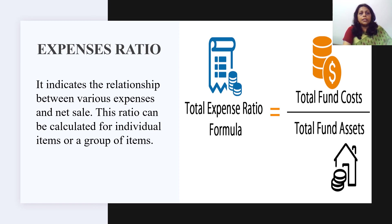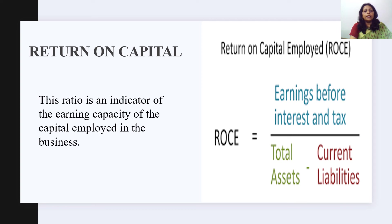For example, the office expense ratio is calculated by dividing office expenses by net sales and multiplying by 100. The return on capital is an indicator of the earning capacity of the capital employed in the business. Capital employed includes not only equity share capital but also fixed liabilities — that is, capital reserves, revenue reserves, and undistributed profit. Return on capital is calculated by dividing net profit earned per year by the capital employed, multiplied by 100, where net profit equals tangible and intangible assets value plus current assets value minus current liabilities value.